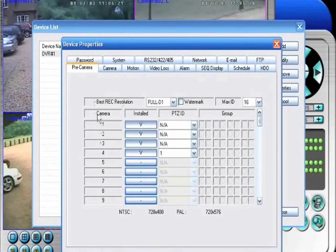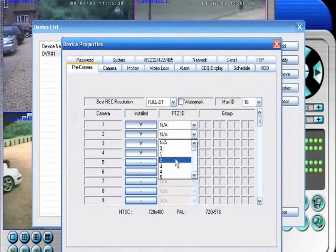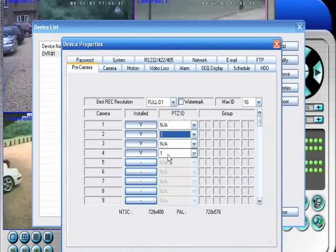Finally, you need to tell the DVR the number of the camera that you're connecting. So, under channel 2, we're going to connect a PTZ camera, which is camera number 3.